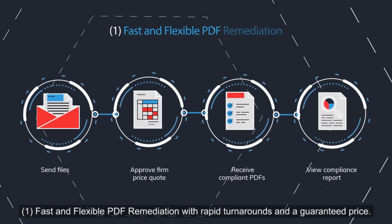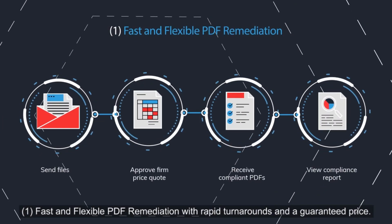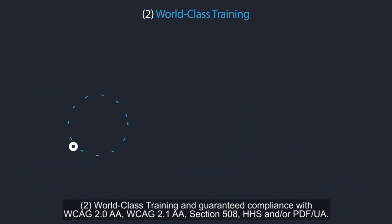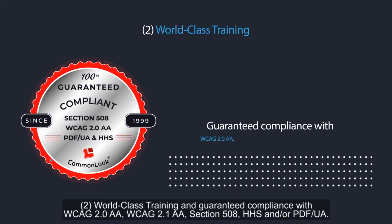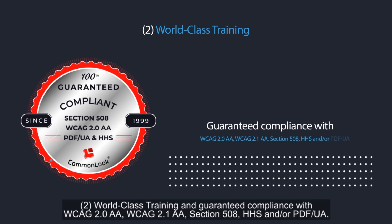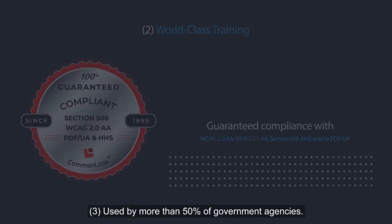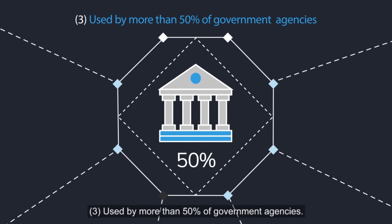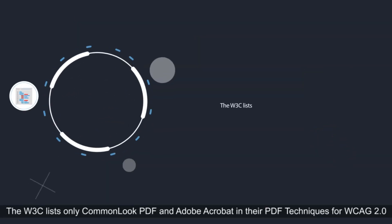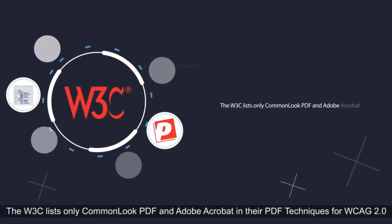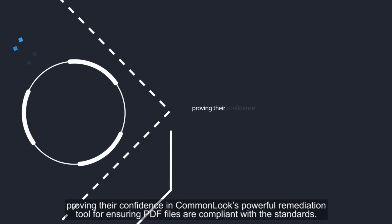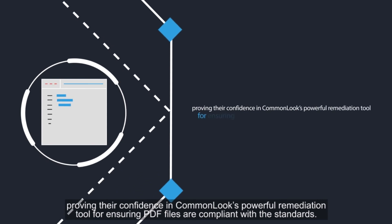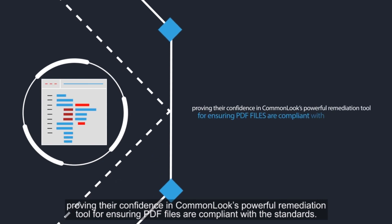Fast and flexible PDF remediation with rapid turnarounds and a guaranteed price. World-class training and guaranteed compliance with WCAG 2.0 AA, WCAG 2.1 AA, Section 508, HHS, and/or PDF UA — used by more than 50% of government agencies. The W3C lists only CommonLook PDF and Adobe Acrobat in their PDF techniques for WCAG 2.0, proving their confidence in CommonLook's powerful remediation tool for ensuring PDF files are compliant with the standards.